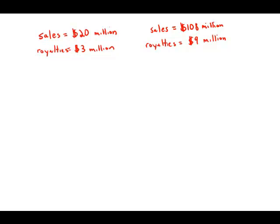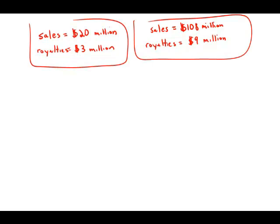By approximately what percent did the ratio of royalties to sales decrease from the first $20 million in sales to the next $108 million in sales? In other words, we have group of sales number one, group of sales number two, what is the percent of decrease of the ratio? So first, let's figure out these two ratios.